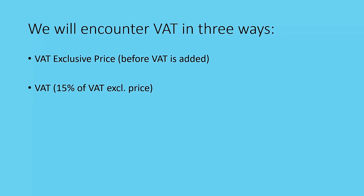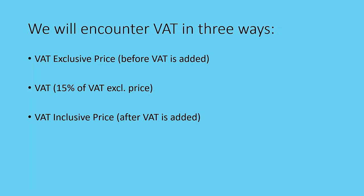VAT is 15% — it's 15% of the exclusive price. So you take the exclusive price, calculate what 15% of it is, and add it to the exclusive price to get what we know as the VAT inclusive price. This is the price after VAT is added. If you went to the wholesalers, you'd see the VAT exclusive price and then the VAT would be added.